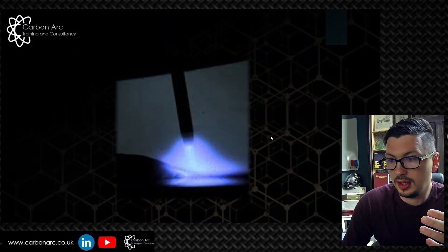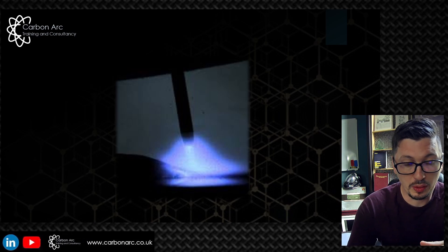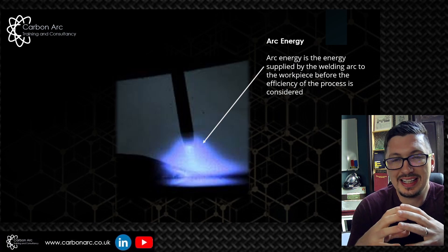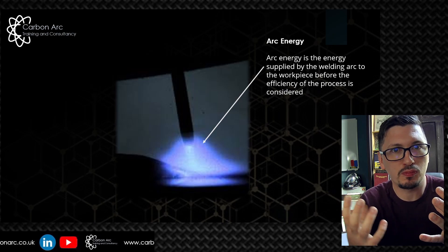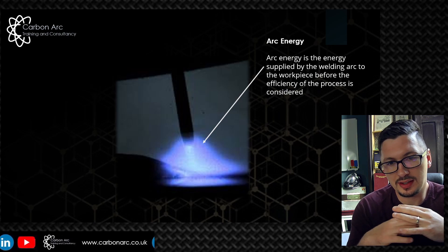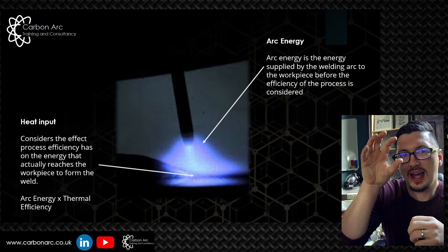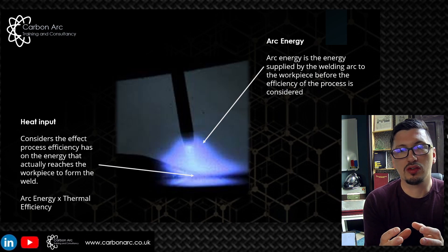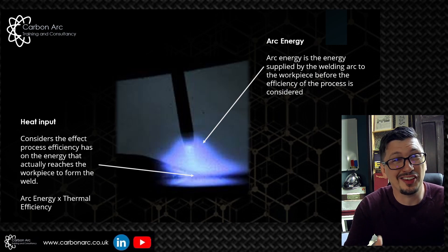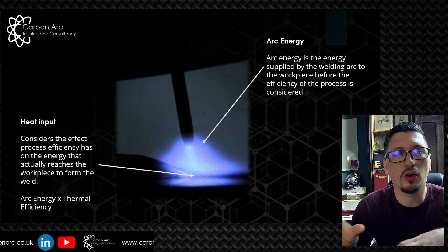Let's concentrate on what the difference between arc energy and heat input actually is. Looking at a TIG welding arc between a non-consumable electrode and the workpiece: arc energy is the energy inside that arc — it hasn't yet reached the workpiece, it's not in the weld pool, it's just what's in that bright blue light. We don't apply a thermal efficiency; it's the most basic of the calculations. Heat input, on the other hand, is how much of that arc energy actually gets into the workpiece as the arc moves across. As long as you're consistently measuring at the same point within the same document and making it clear which one you're using, you're fine.